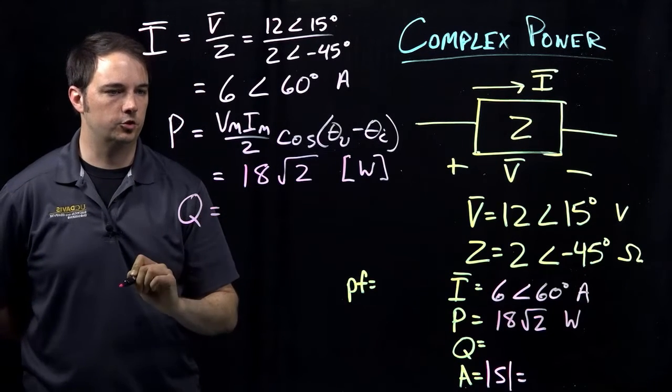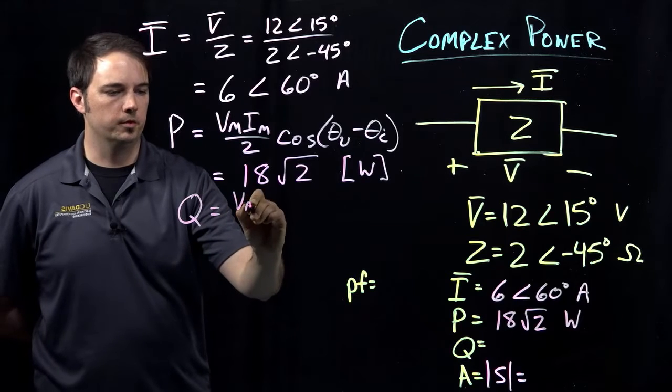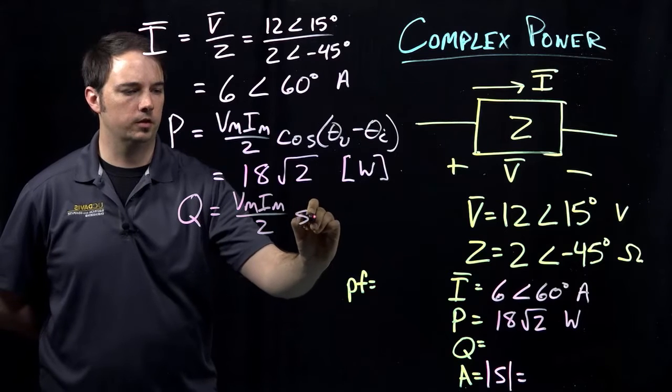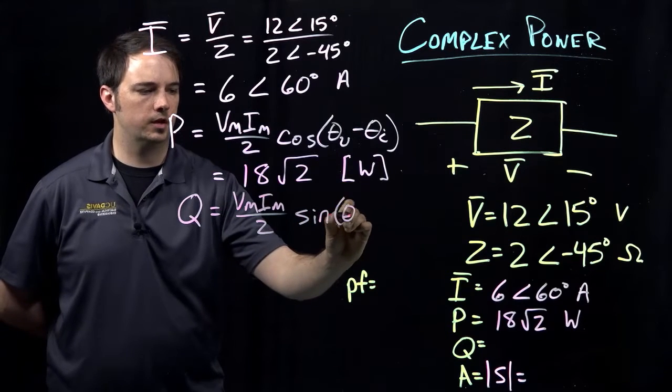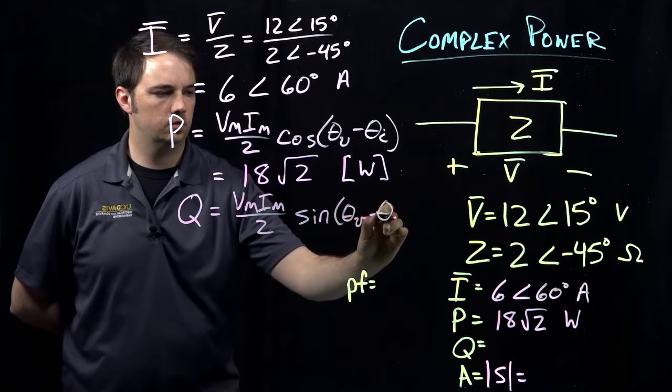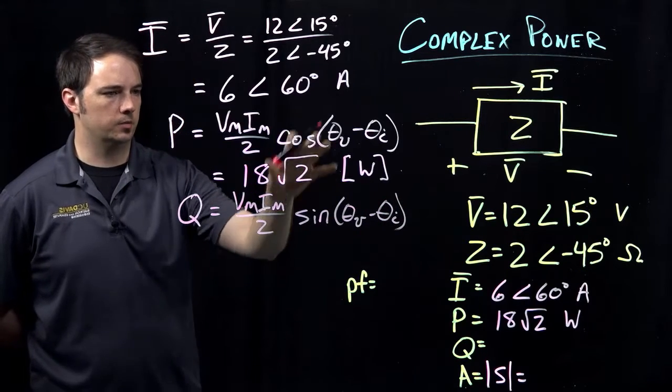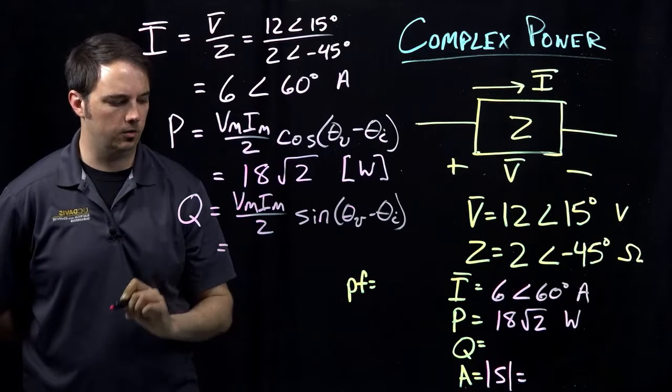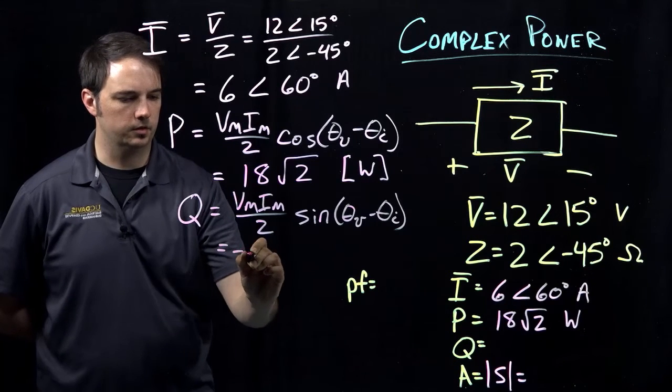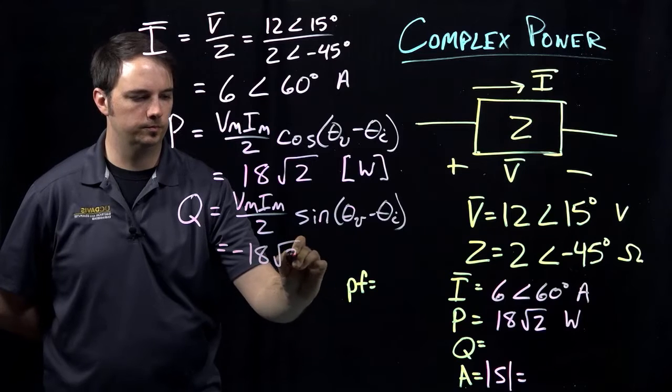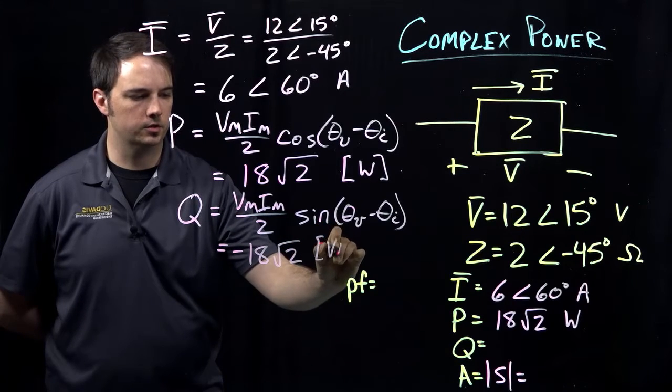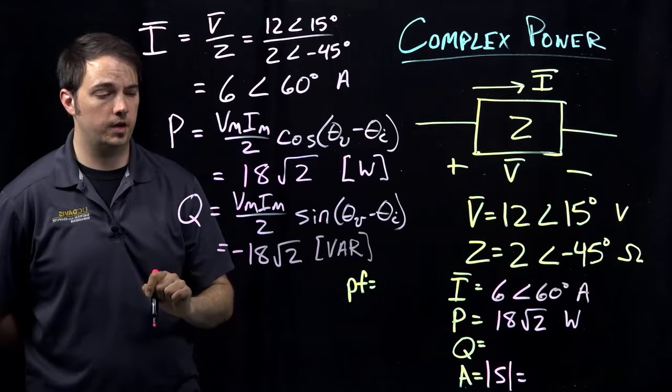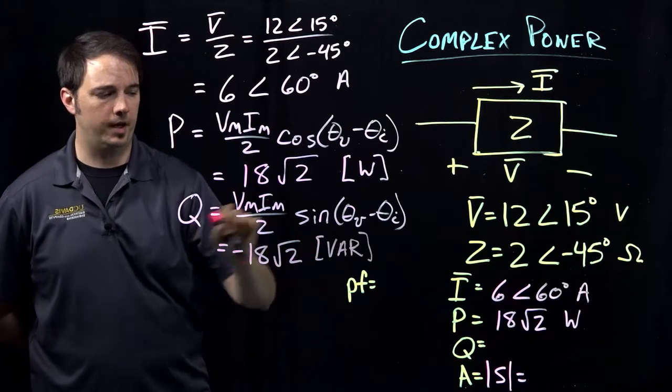Then for capital Q, my reactive power, remember the same initial term, still Vm times Im over 2, but now looking at the sine of the difference of the angles. So here I would just again apply the same terms that I applied to finding my average or real power. And here I would get basically the inverse, negative 18 root 2. Note here that the units for reactive power are given in terms of VARs, V-A-R. This stands for volt amp reactive.